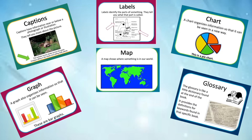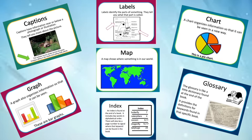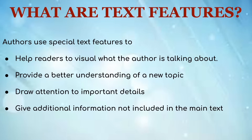A glossary is like a little dictionary found at the end of the book. It provides definitions for keywords found in that specific book. An index is also found at the end of the book. It includes keywords in alphabetical order, with page numbers to show where that keyword can be found in the book.